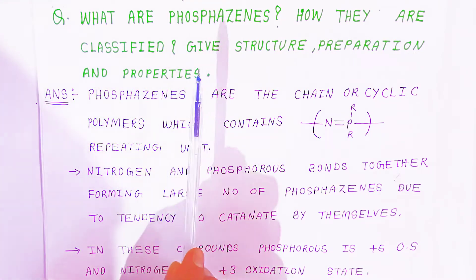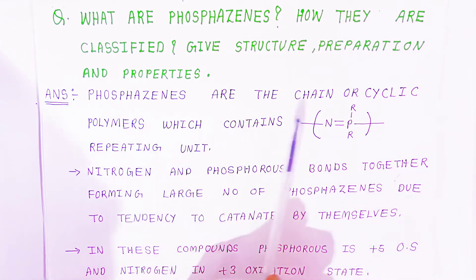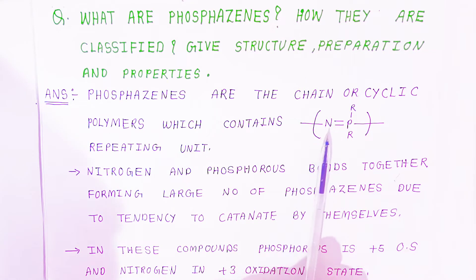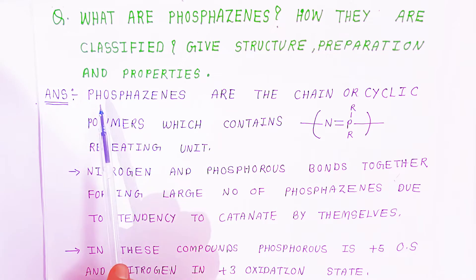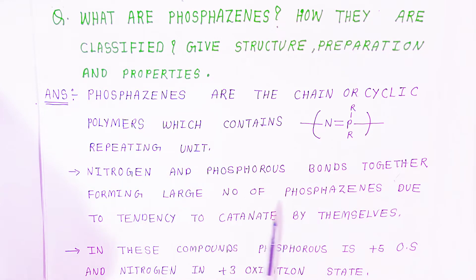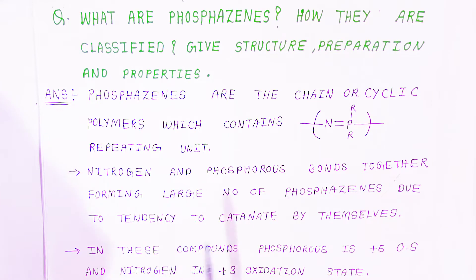If asked in an examination you have to write like this: Phosphazenes are chain or cyclic polymers which contain a nitrogen-phosphorus double bond as a repeating unit, which is unsaturated. This P=N unit is the repeating unit in Phosphazenes. Nitrogen and Phosphorus bond together forming a large number of Phosphazenes due to their tendency to catenate.